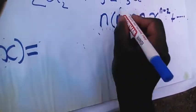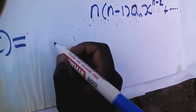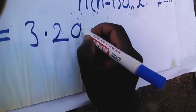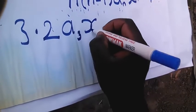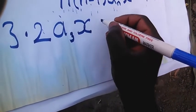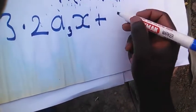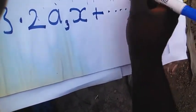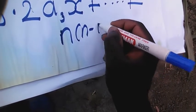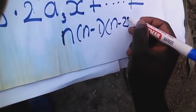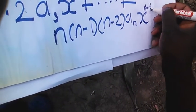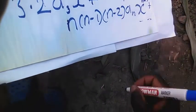If we differentiate all of this again, it will give 0 for the constant, then 3 times 2 A3 times x, plus up to the nth term, which is n times n minus 1 times n minus 2, An times x to the power n minus 3, and so on.